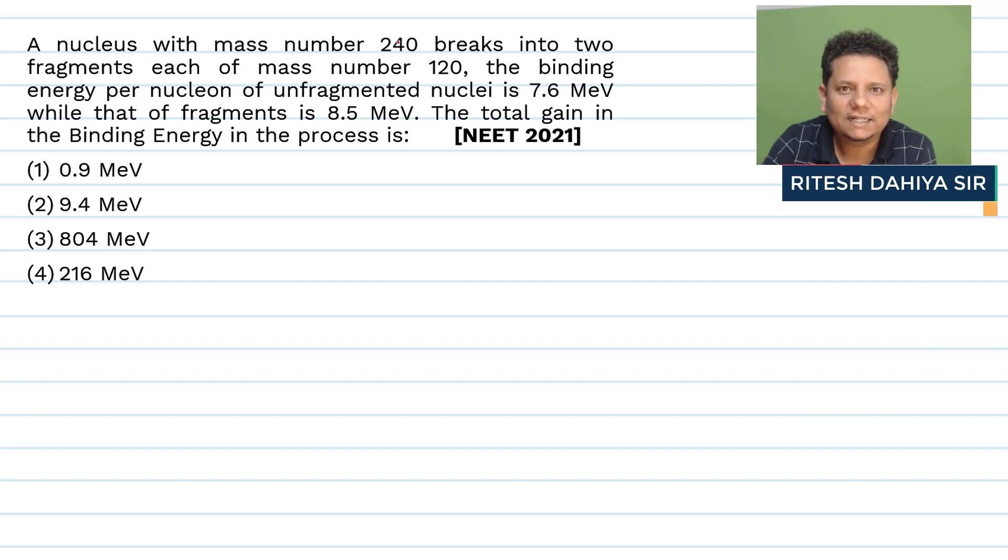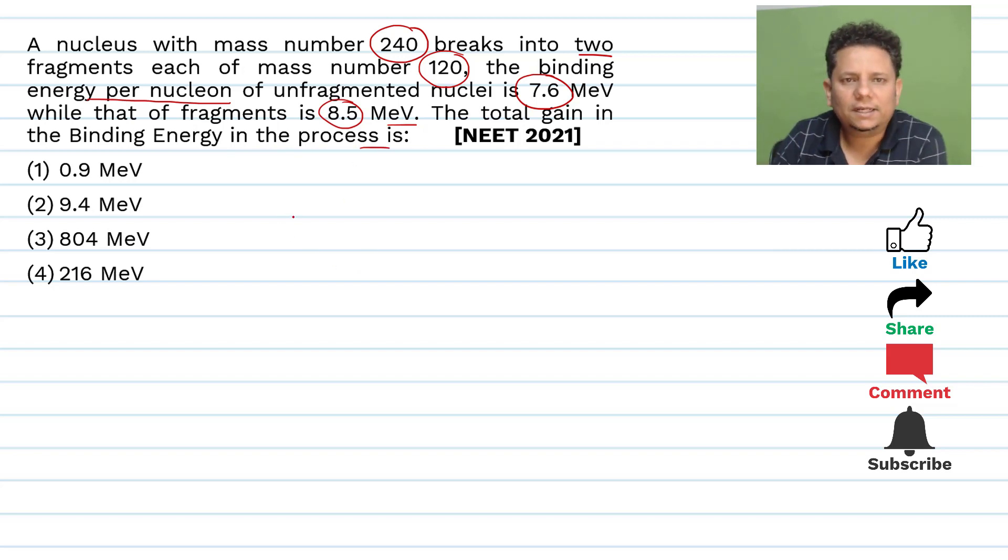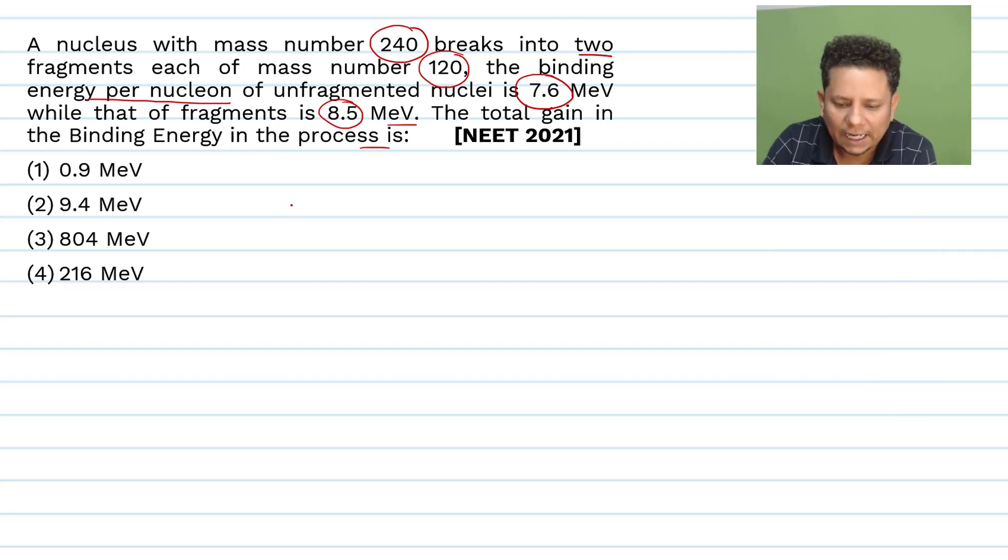A nucleus with mass number 240 breaks into two fragments each of mass 120. The binding energy per nucleon of the unfragmented nuclei is 7.6 and that of the fragments is 8.5 mega electron volt. The question is: what is the total gain in binding energy in the process?